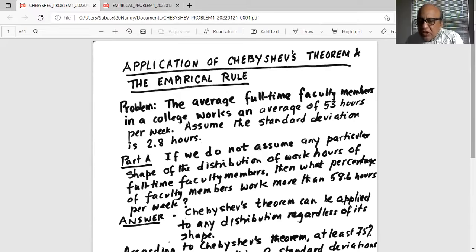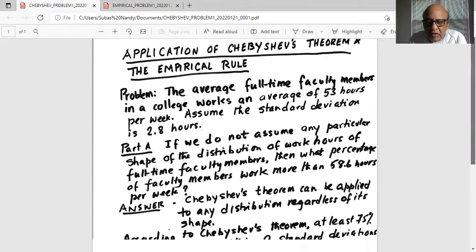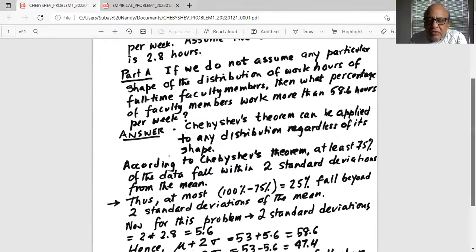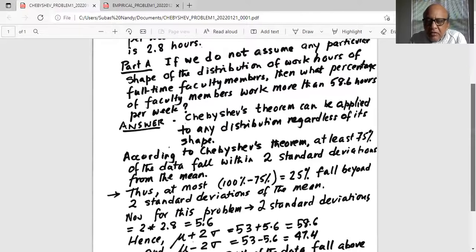Answer. Chebyshev's Theorem can be applied to any distribution regardless of its shape. According to Chebyshev's Theorem, at least 75% of the data fall within two standard deviations from the mean. What that means is two standard deviations on the right of the mean and two standard deviations on the left of the mean. So, at least 75% of the data fall within two standard deviations from the mean.